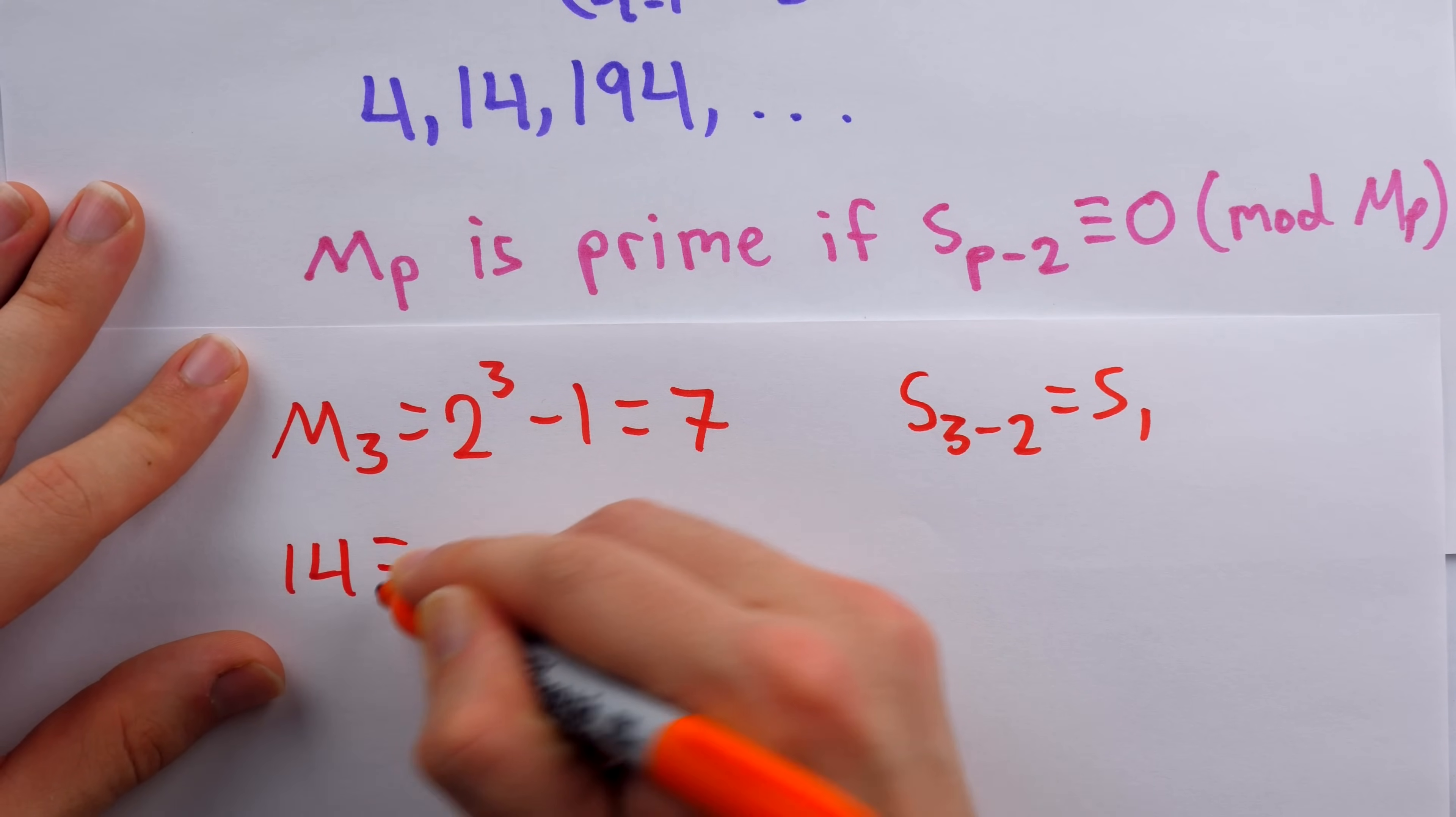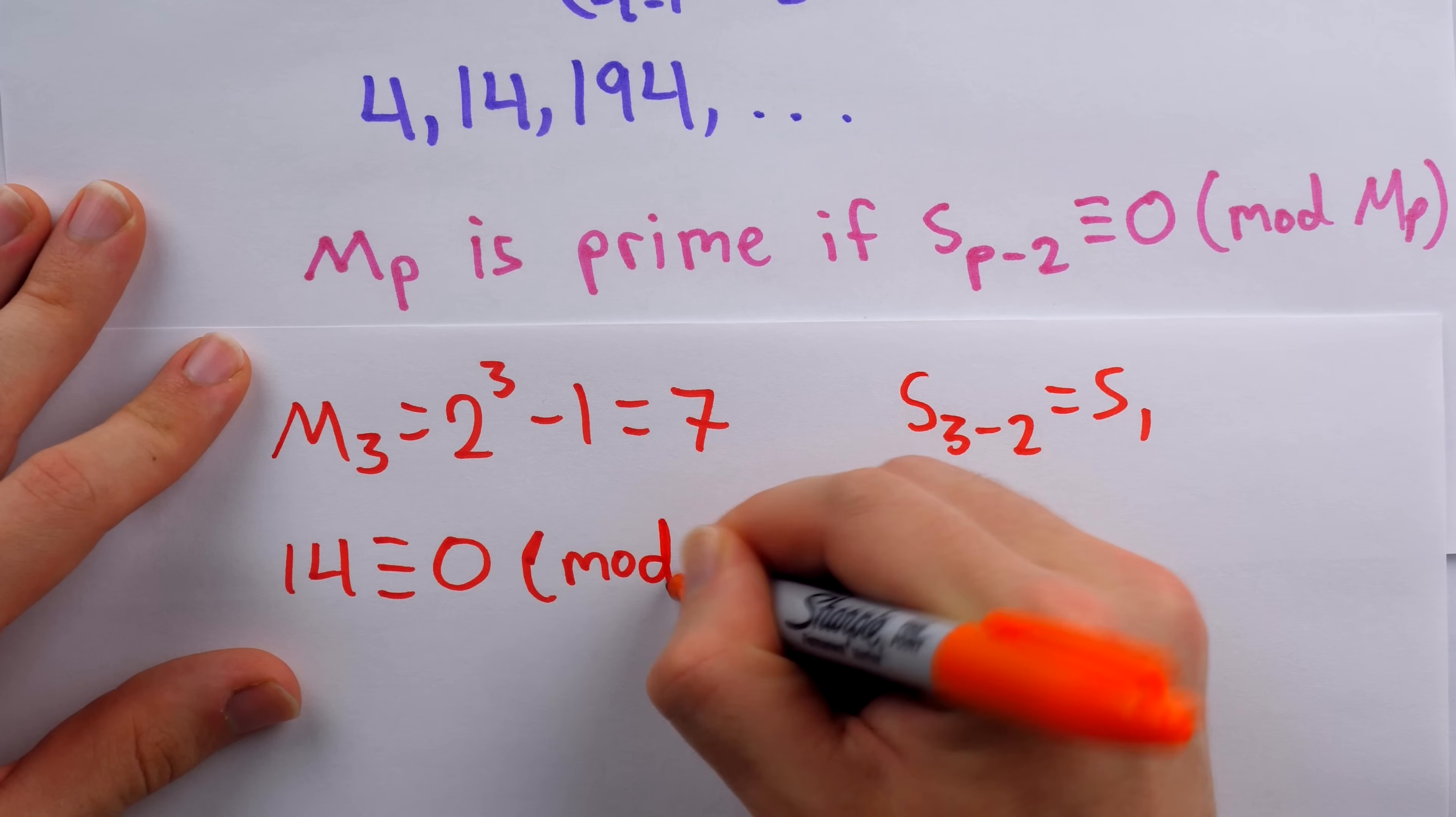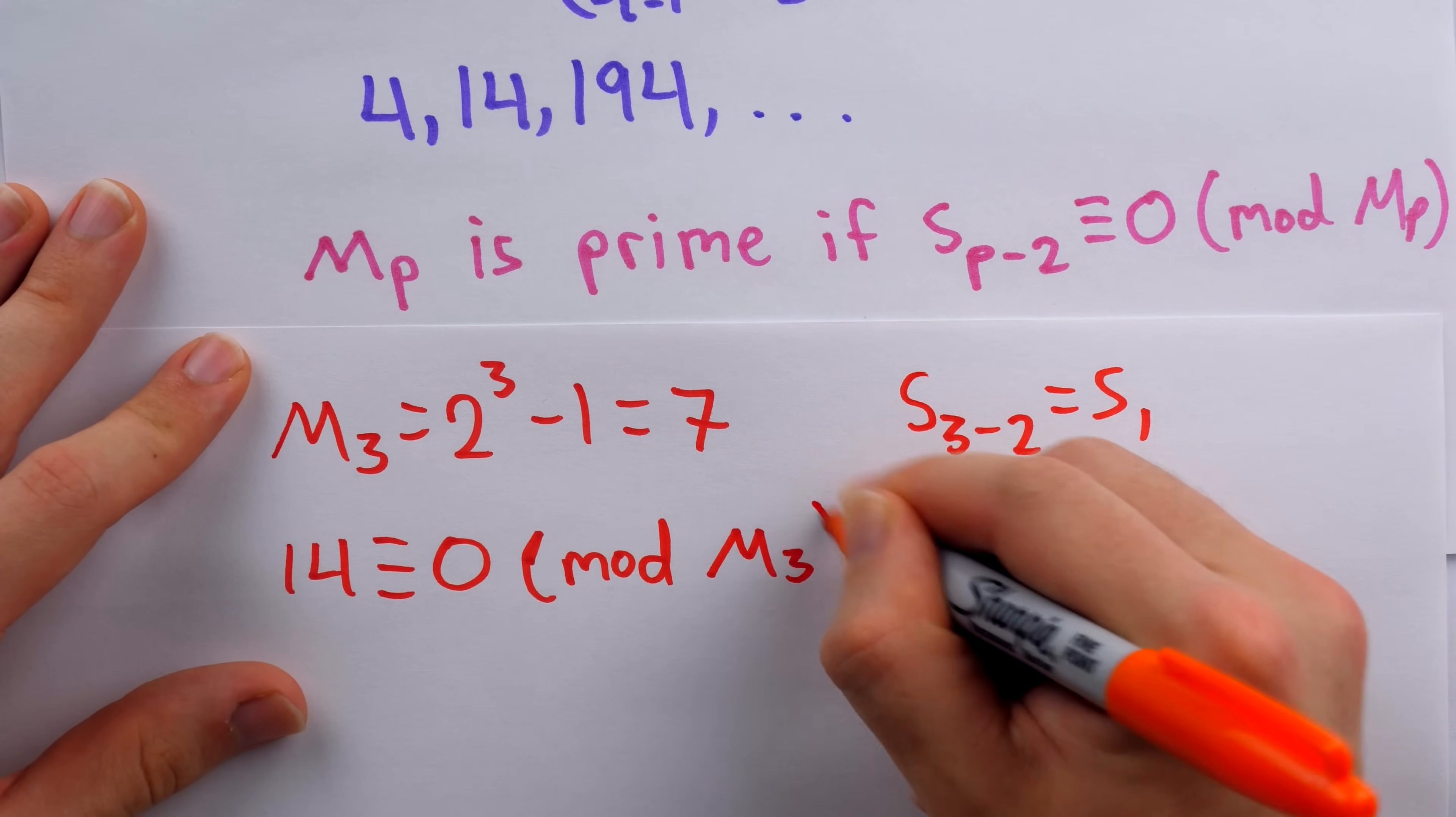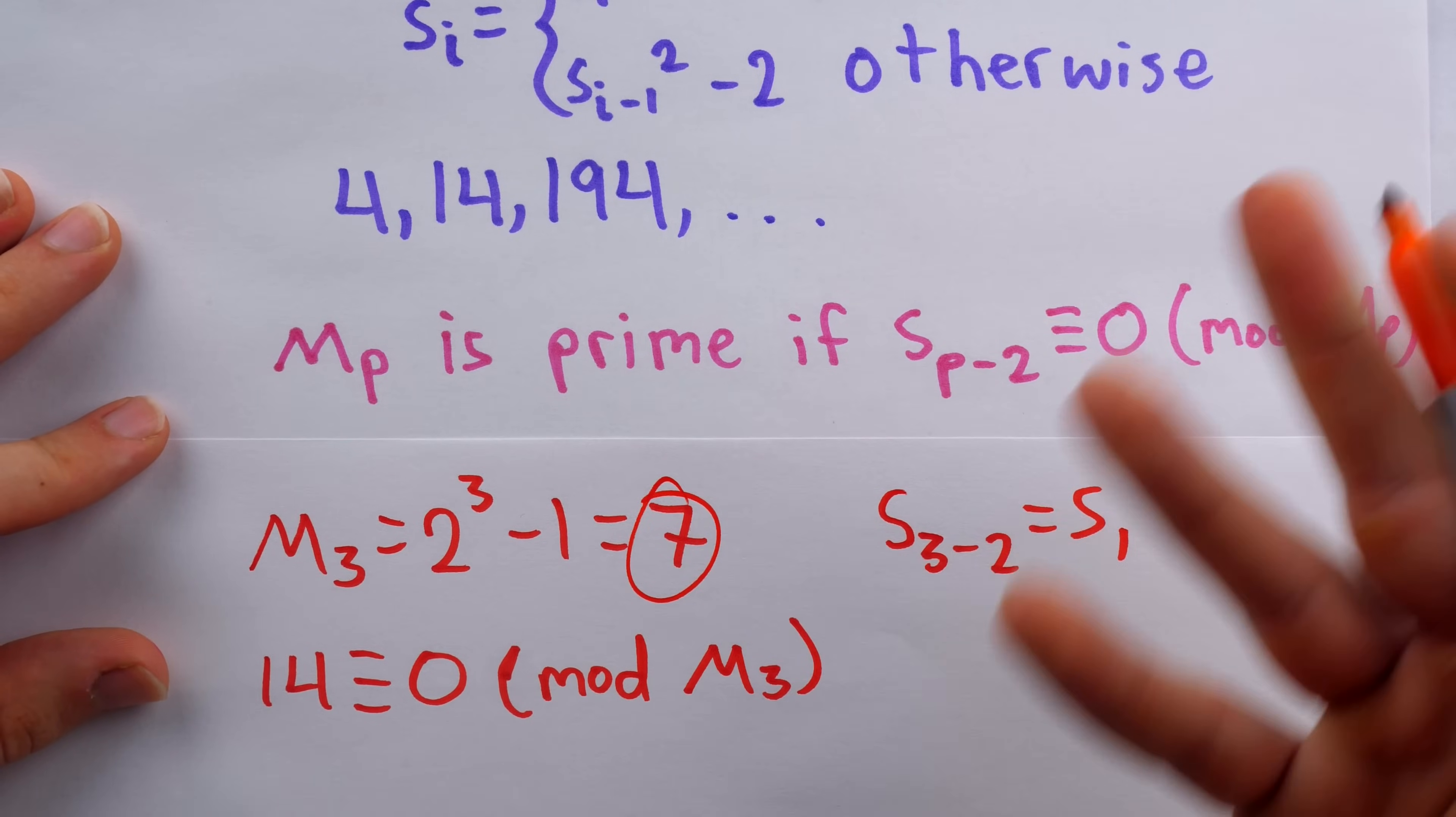Now indeed, 14 is a multiple of seven. It is congruent to zero mod, in this case M_3, which is seven. And so indeed, we confirm via this test that M_3 is prime. Of course, we know it is because it's seven.